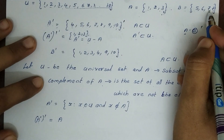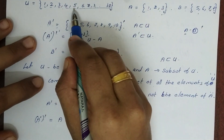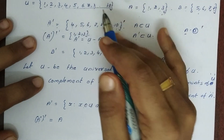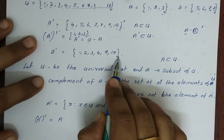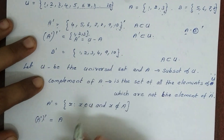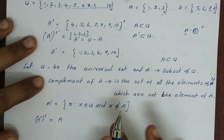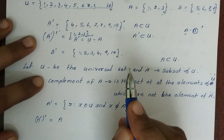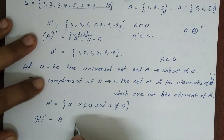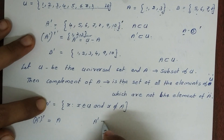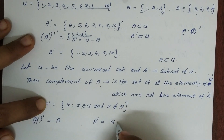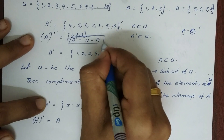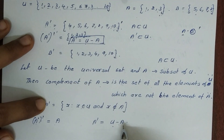Now B complement: B elements are selected. The complement formula is A complement equals U minus A — the universal set minus A.